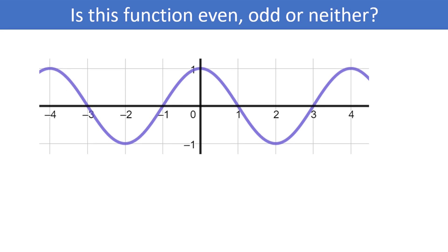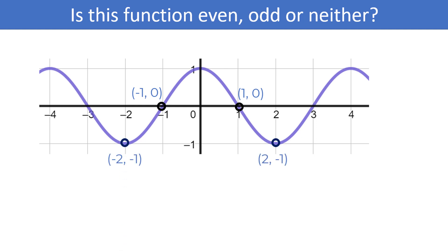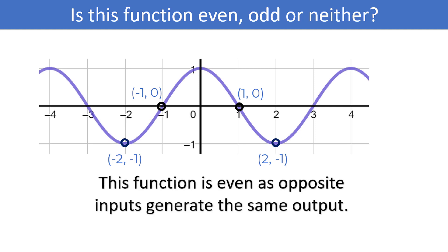Let's try one more — is this even, odd, or neither? It looks like we have certain points on the graph, and opposite inputs appear to be producing the same output. That indicates this is most likely an even function.